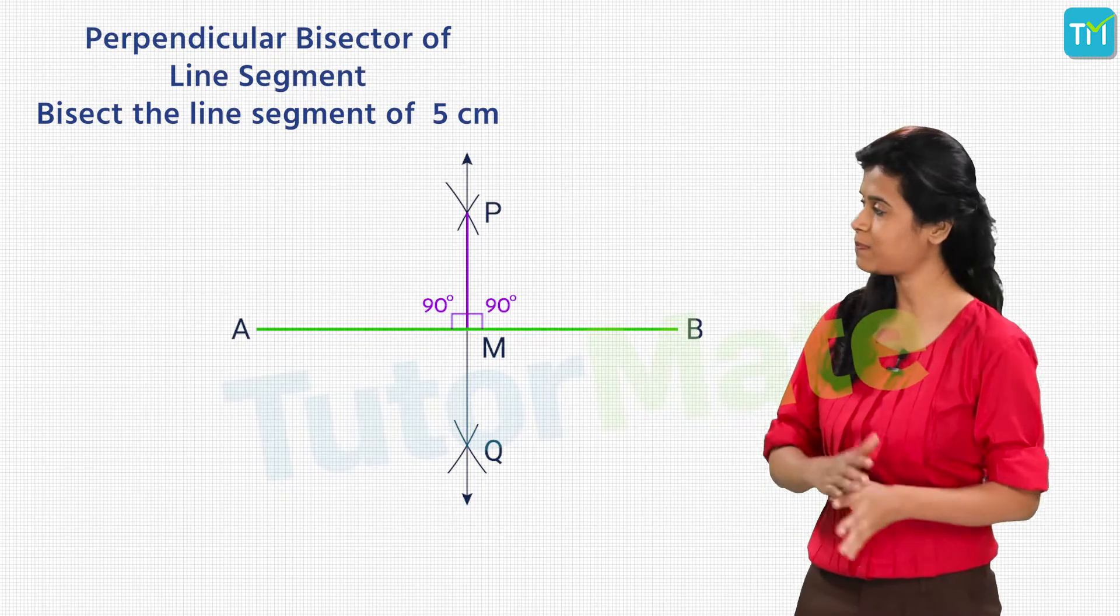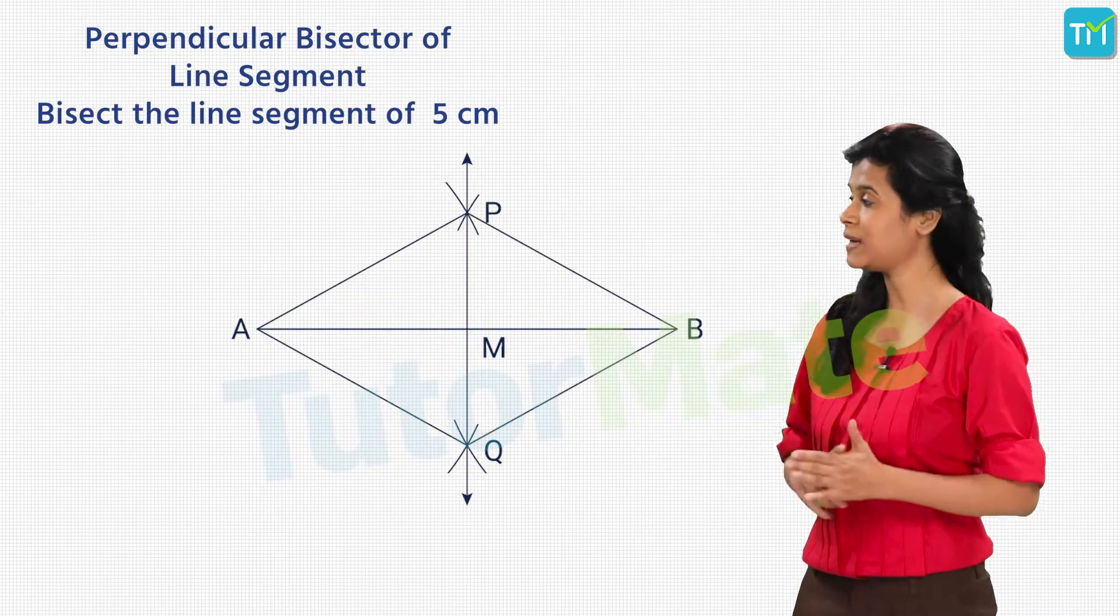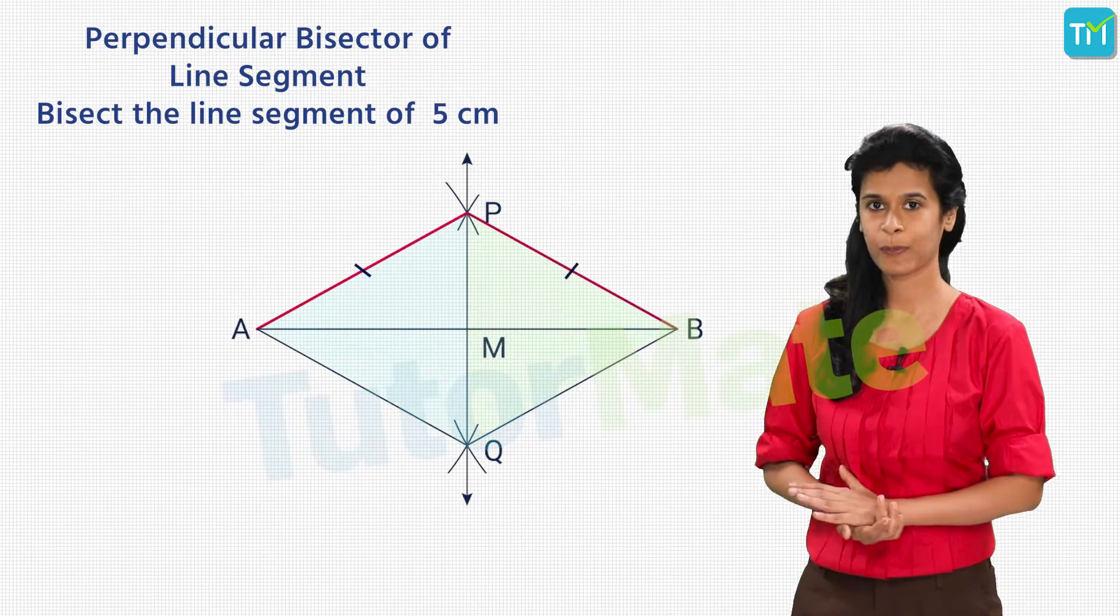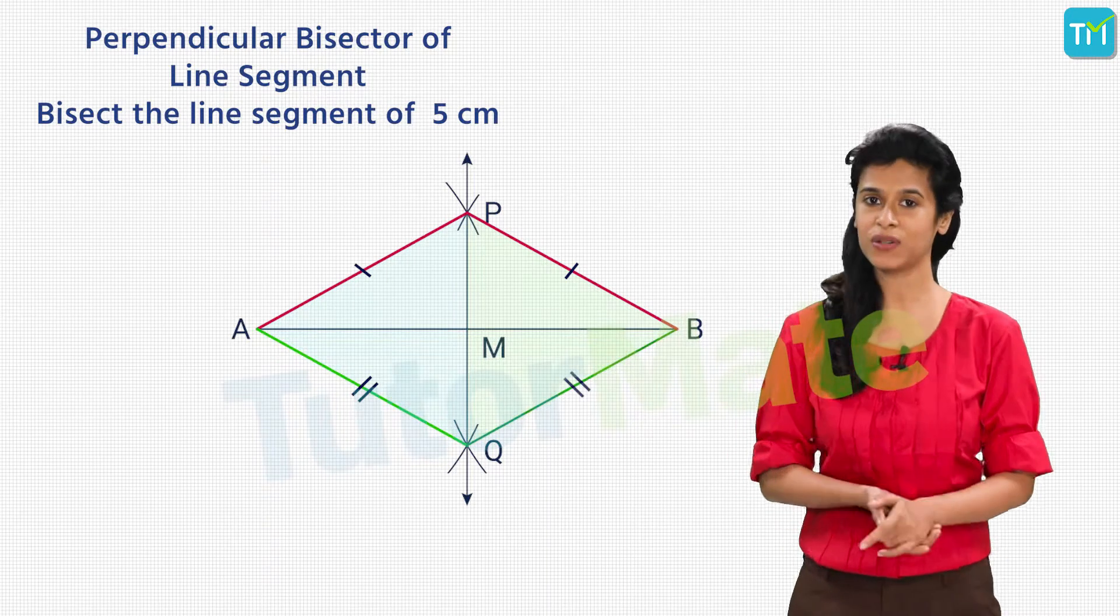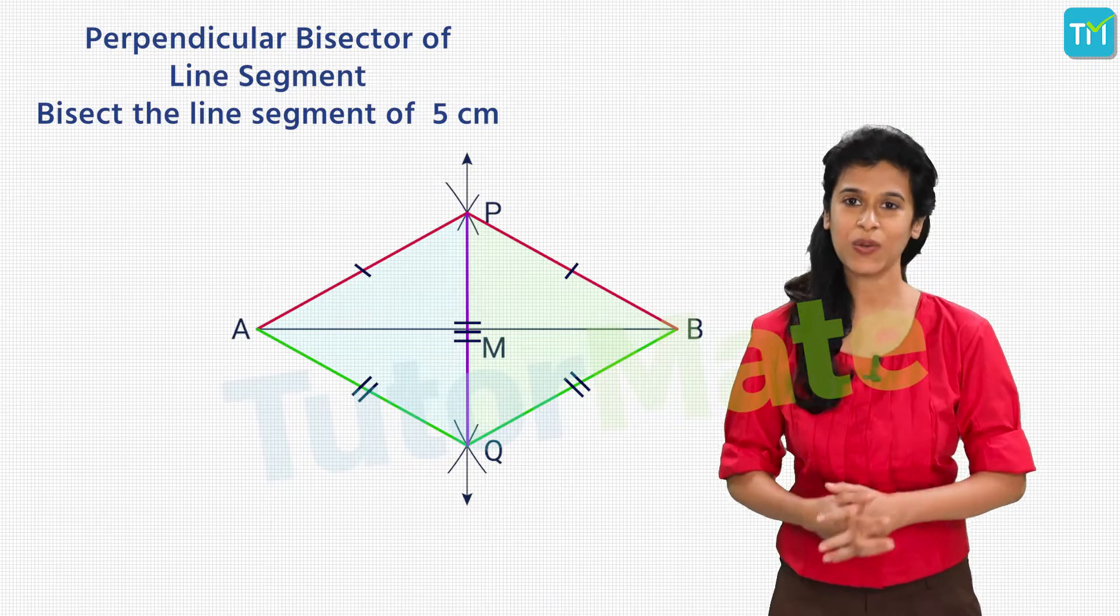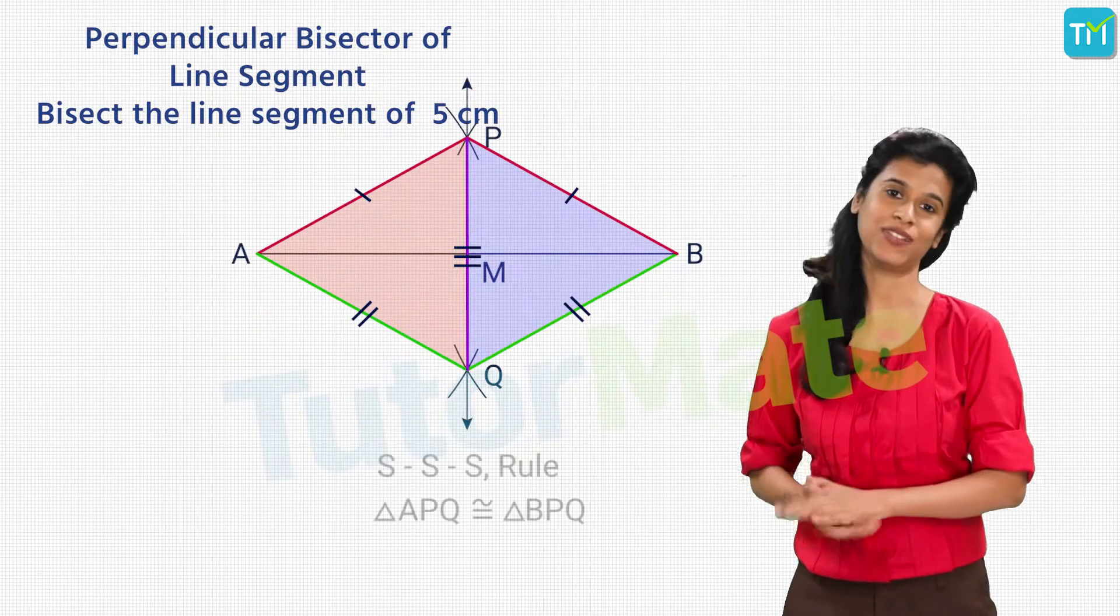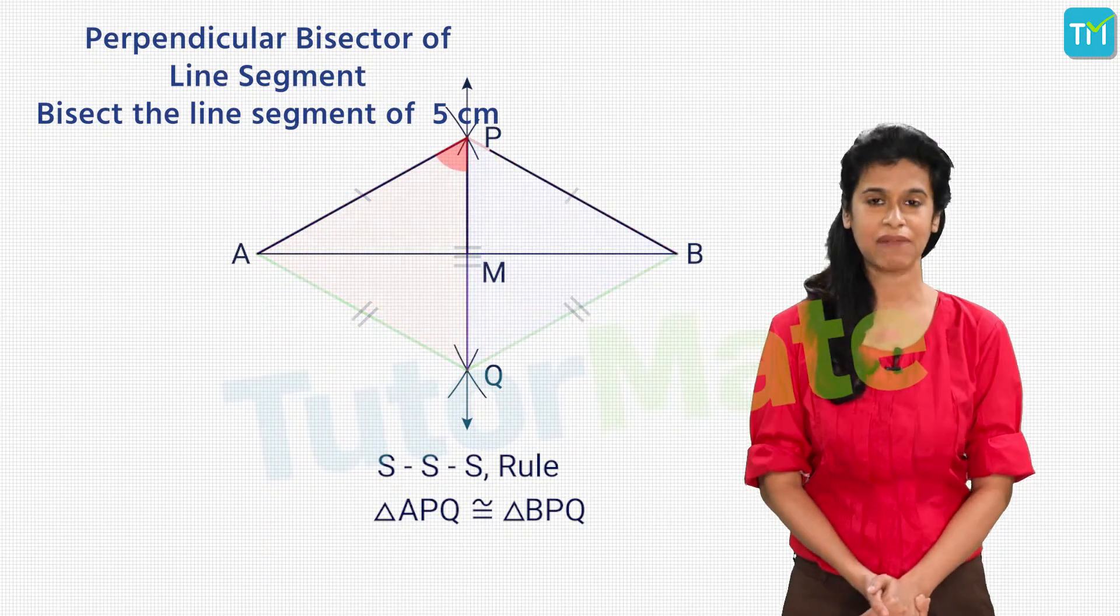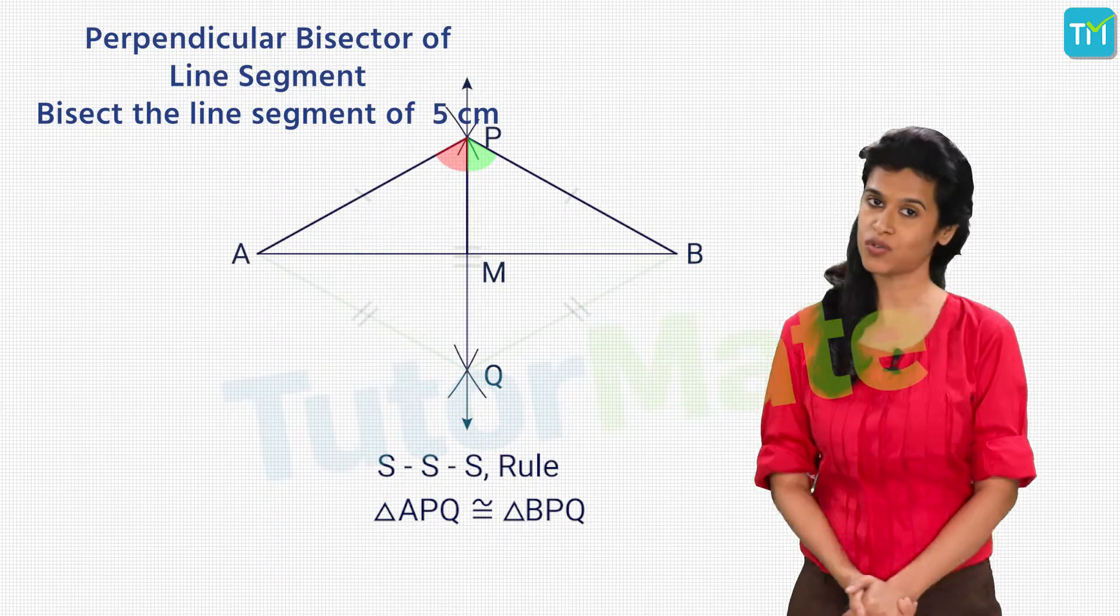We can do it by again using the congruency test for triangles. First, join the points AP, AQ, BP and BQ. In triangles APQ and BPQ, AP is equal to BP by our construction. Similarly, AQ and BQ are equal and PQ is common. Hence, triangles APQ and BPQ are congruent using the side-side-side rule. So, we can say angle APM and BPM are equal because they are corresponding angles of congruent triangles.